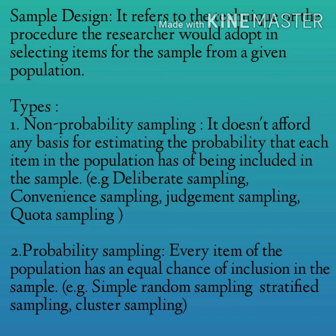Probability sampling, on the other hand, is also known as random sampling or chance sampling. Under this sampling design, every item of the population has an equal chance of inclusion in the sample. There are many types of probability sampling, like simple random sampling, stratified sampling, cluster sampling, systematic sampling, etc. For example, if we have to select a sample of 300 items from a population of 15,000 items using a random number table or conducting a lottery, then it is called probability sampling.